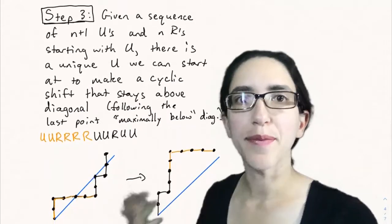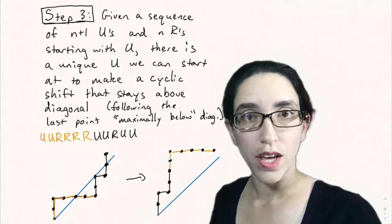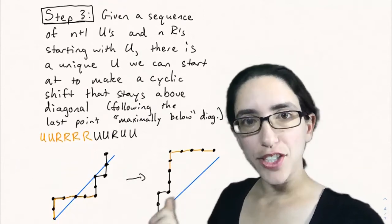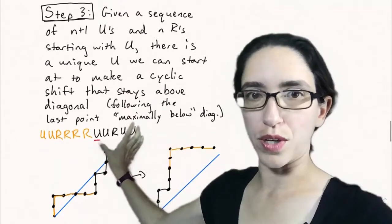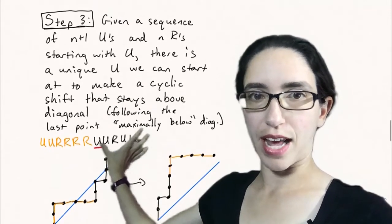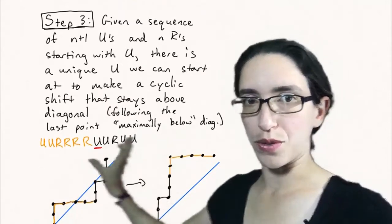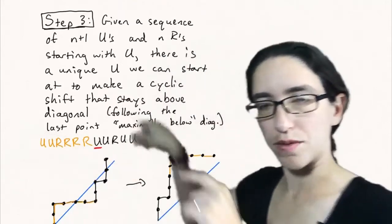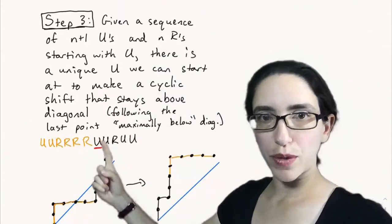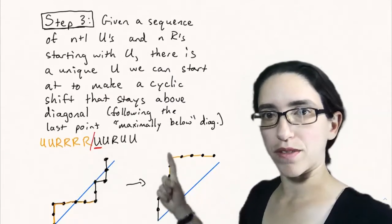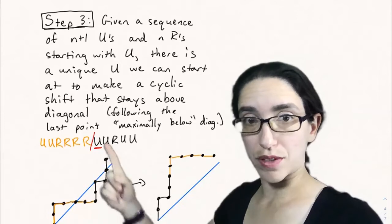Step three: given a sequence of n plus 1 Us and n Rs that start with U, we notice that there's actually a unique way we can cut the sequence in half and shift it. Making a cyclic shift means cut it in half and move all the black letters to the other side of the word, kind of wrap around starting with that U. And there's a unique point we can shift it so that it does make one of these extended Dyck paths that stays above the diagonal. Here's an example in this case.